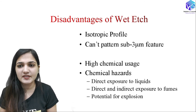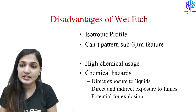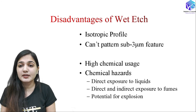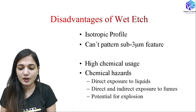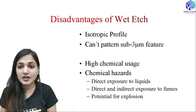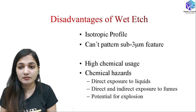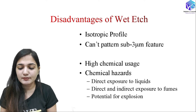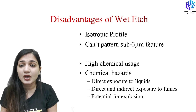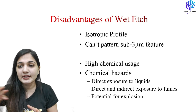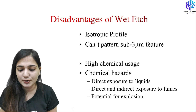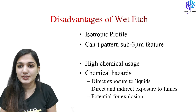Coming to the disadvantages: wet etching gives an isotropic profile, meaning a uniform etch rate in all directions, which we want to avoid. Second, it cannot give feature sizes smaller than 3 micrometers. There is also high chemical usage and associated hazards — direct exposure to liquids and indirect exposure to fumes, which are very difficult to control. There is also the potential for explosion.